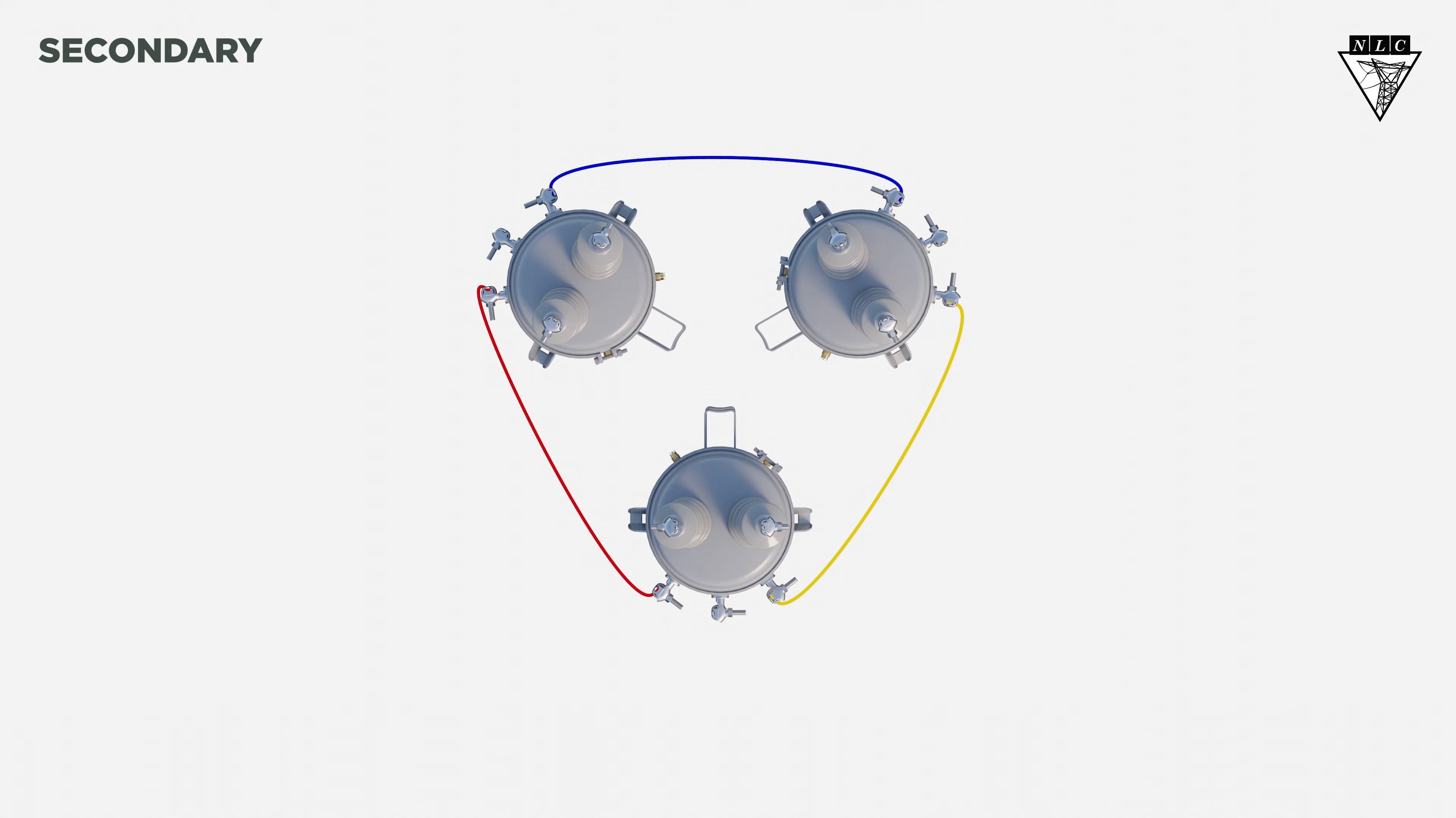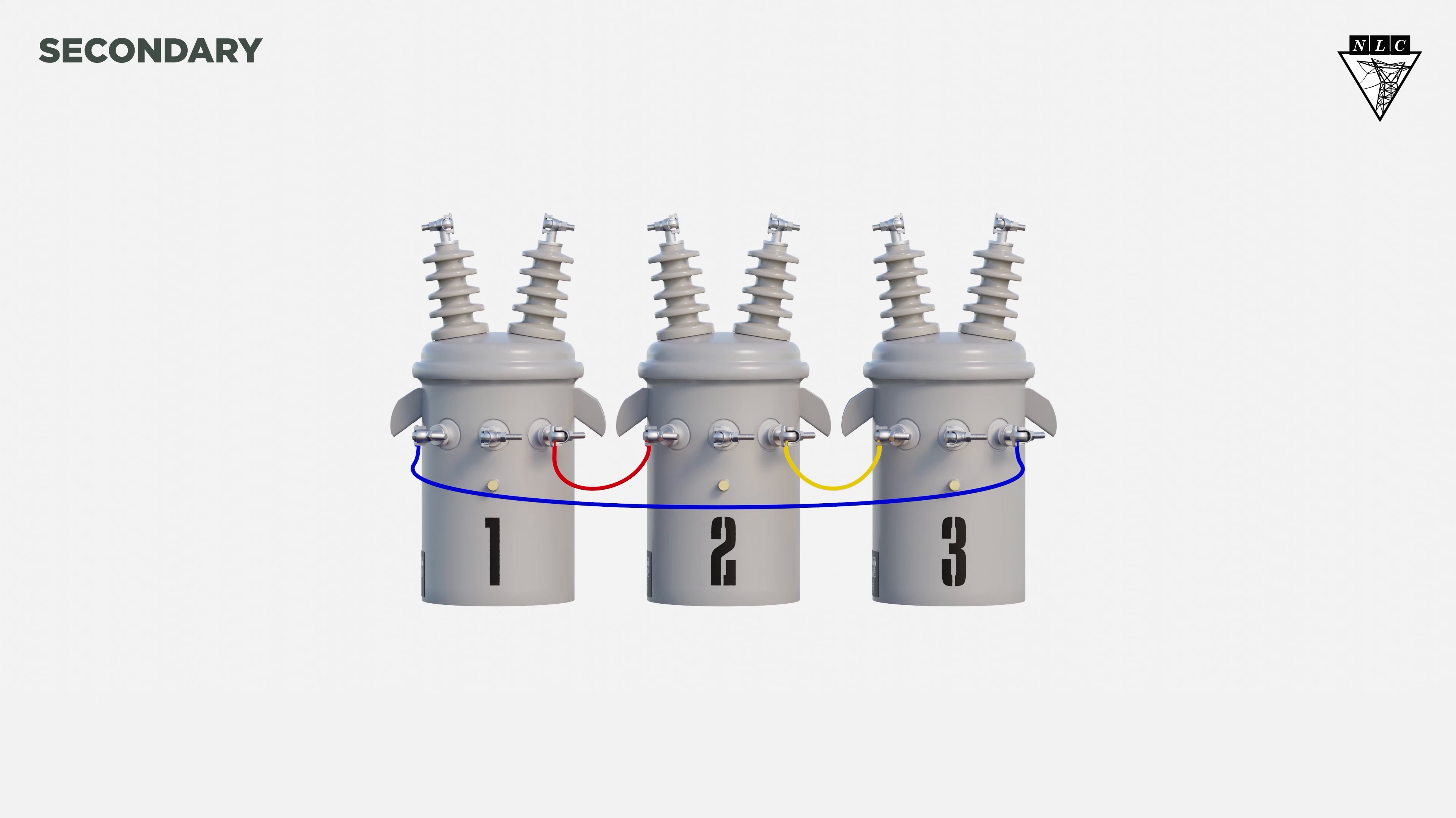Now, let's see the connections from the front view. Again, this is the most efficient way to supply power using a three-phase system.